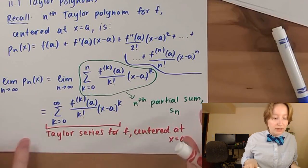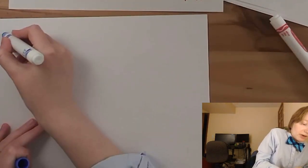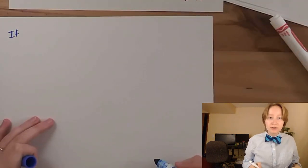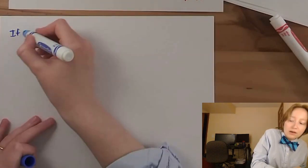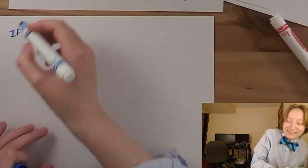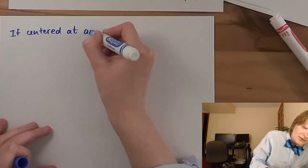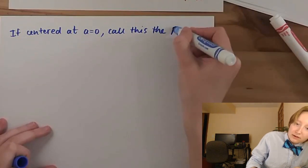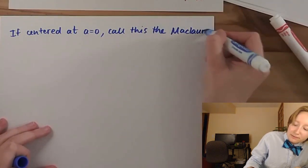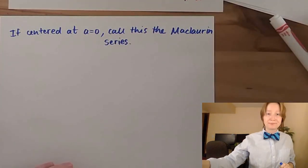This is pretty neat — there's a really nice pattern here. We also have another piece of terminology: if the center for the Taylor series is a equals 0, we call that the Maclaurin series. So the Maclaurin series is a special case of the Taylor series, centered at a equals 0.